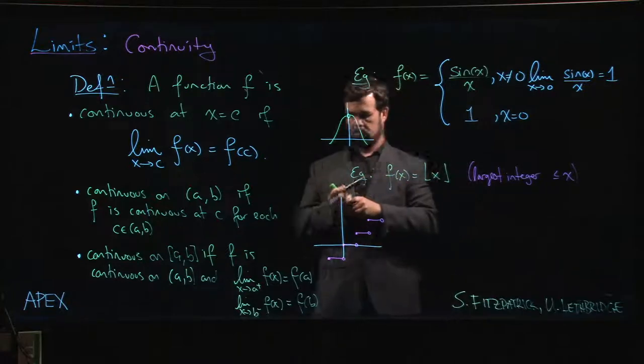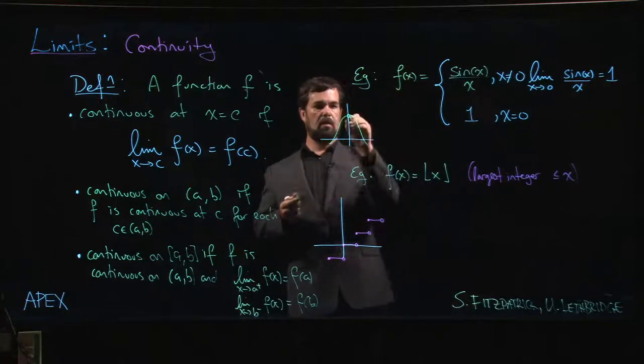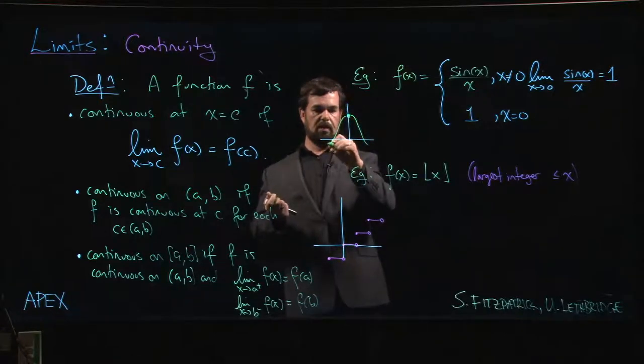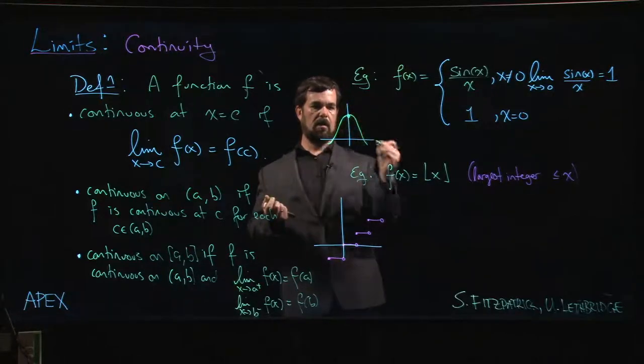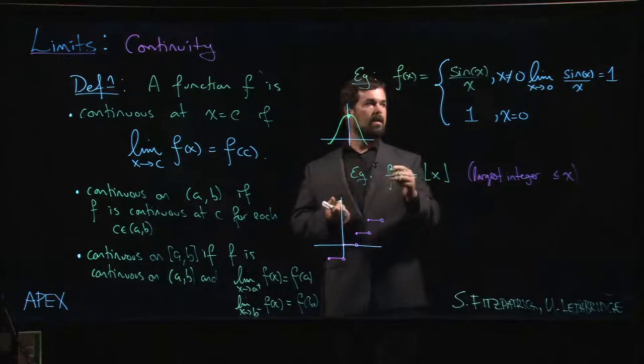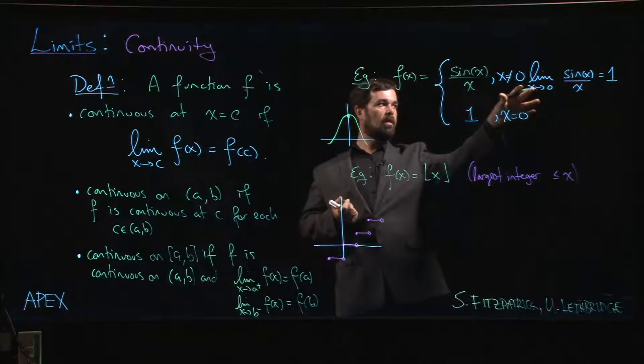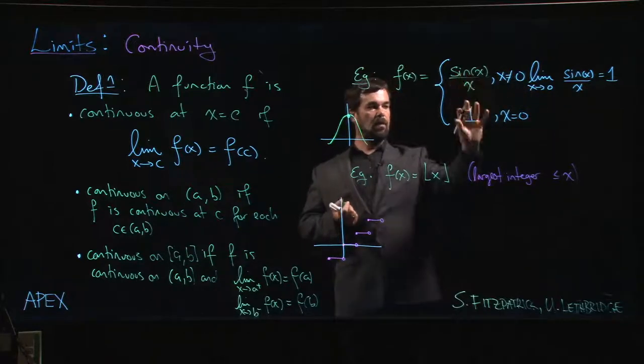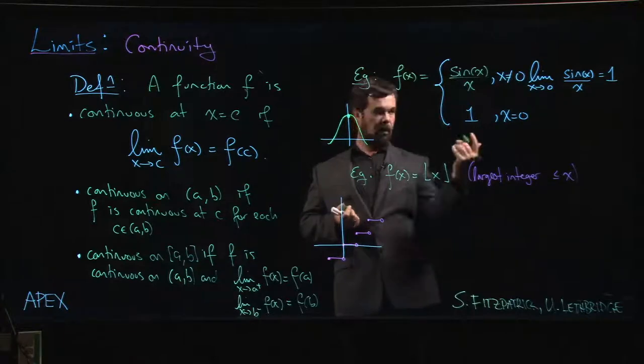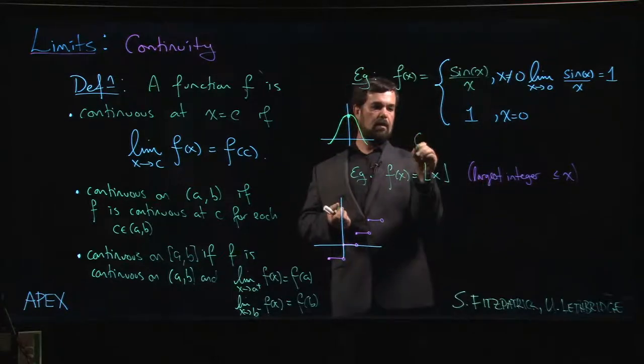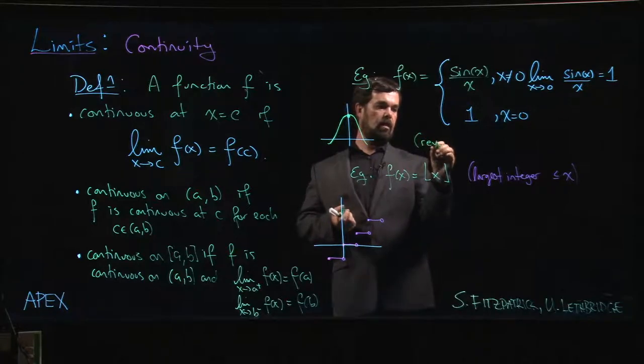Giving it that value of one essentially plugs the hole. Now we don't have a break in the graph anymore - it's one continuous piece, one solid piece. This sort of situation where the limit exists, it's finite, but at that point the function either is undefined or isn't defined correctly - these have a name: these are known as removable discontinuities.